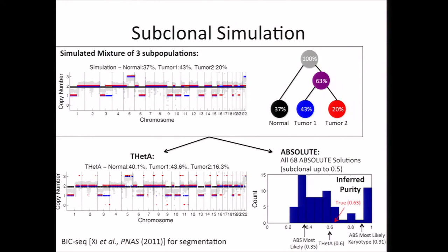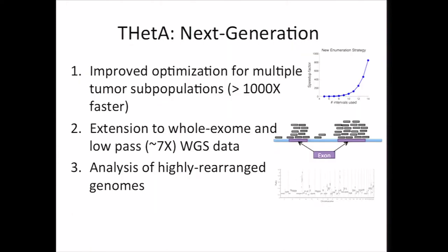We've continued to do some work on THetA, and I want to talk about three improvements we've done recently. First, we've done a lot to improve the optimization when considering multiple tumor subpopulations — it's over thousands of times faster than it used to be. We've also extended THetA to be applicable to both whole genome and low-pass sequencing data. And we've done further refinements that allow us to measure copy number aberrations at a more precise level, enabling better analysis of highly rearranged or highly segmented genomes.